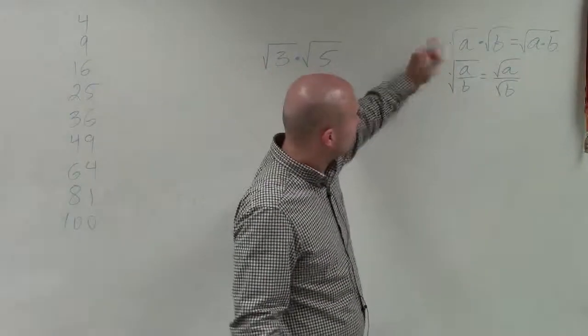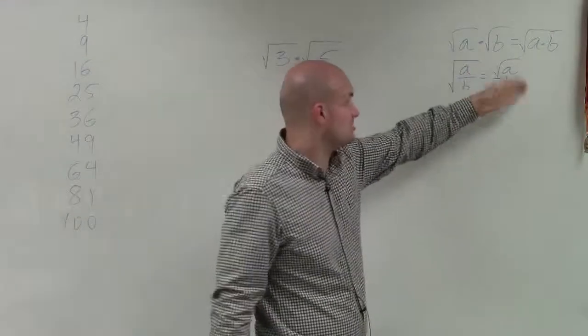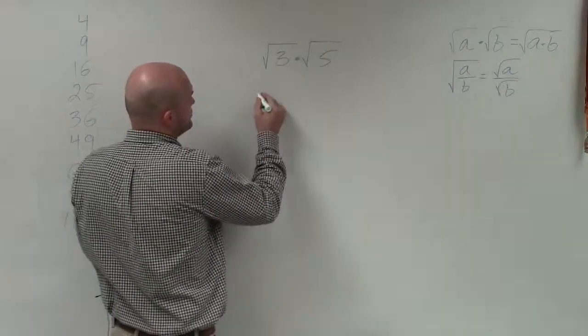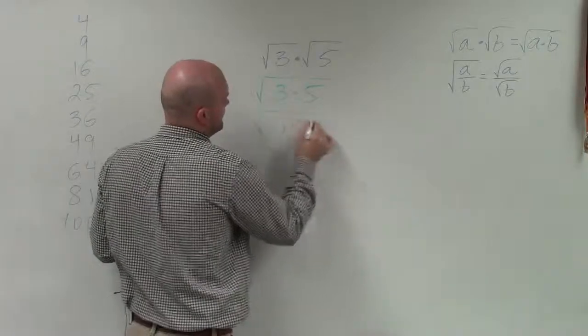By going by our rules of radicals, we know that when we have the square root of an expression times the square root of another expression, we can just take the square root of their product. So basically, I can just take the square root of 3 times 5, which is just equal to the square root of 15.